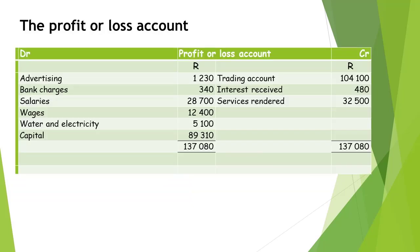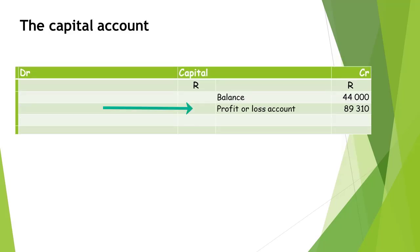After posting the closing transfer journal entry to the general ledger, the profit or loss account will now have a zero balance. The net profit made by the business will now reflect on the credit side of the capital account together with the opening balance of the capital account.